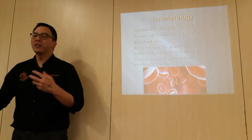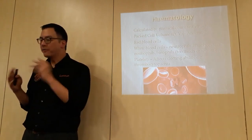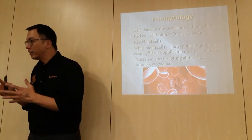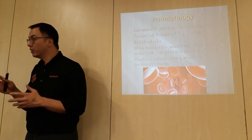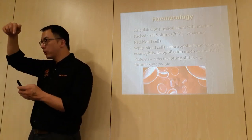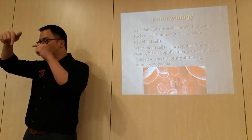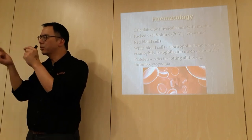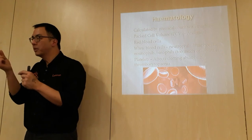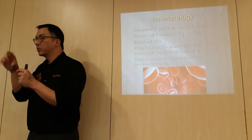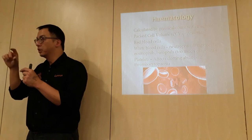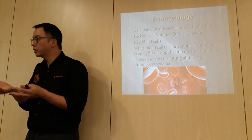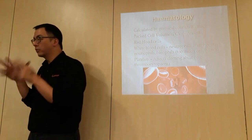In hematology, to find out about red blood cells, white blood cells, and platelets, they are physically counted by a machine. The blood is run through and a light shines through the cells. By measuring how much light passes through, the machine identifies and counts the different cell types.